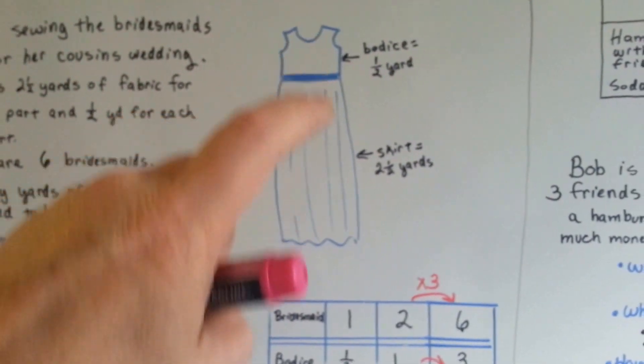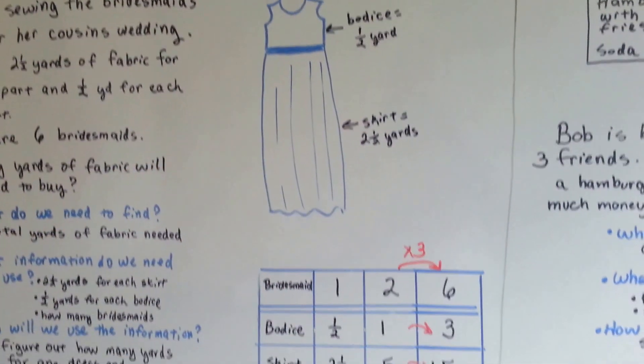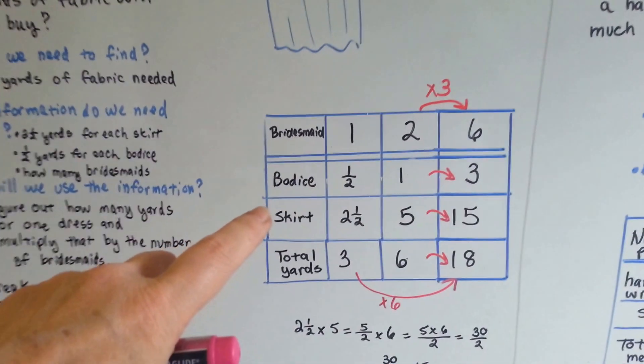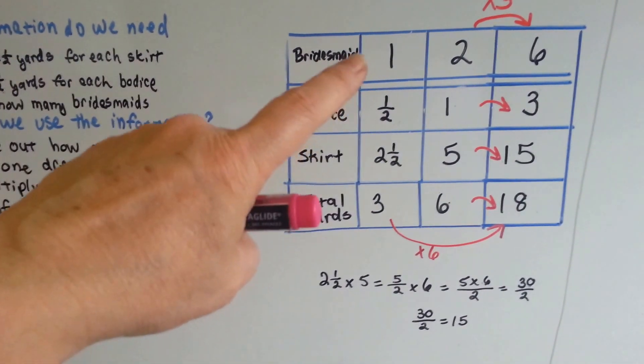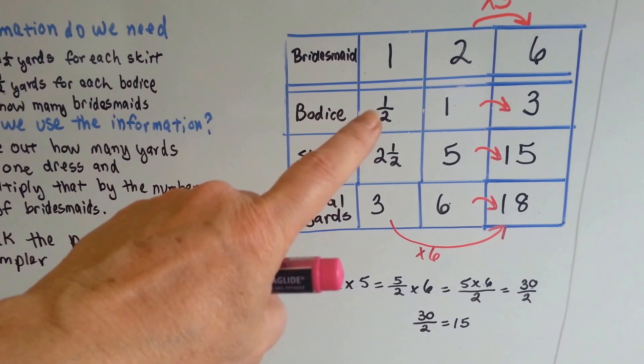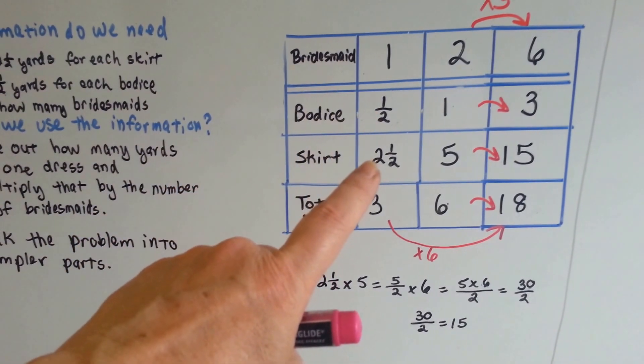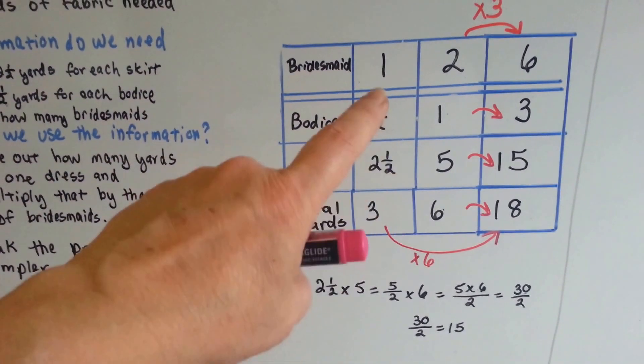So there's the dress, there's the bodice, the half yard, and the skirt that's two and a half yards. And then here's the chart we were able to make. So for one bridesmaid, she needs a half a yard for the bodice and two and a half yards for the skirt. That's a total of three yards.